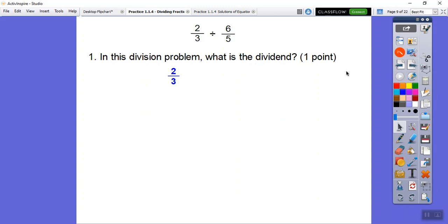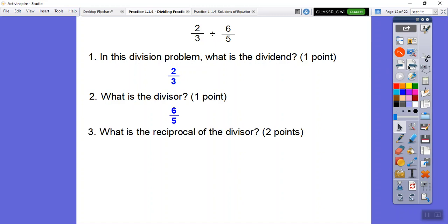And then this one says which one is the divisor? Let's see, the quotient is the answer, I apologize. So the divisor is this one, dividend divided by the divisor. So the divisor is six-fifths. And then the next part is what's the reciprocal? Is it starting to sort of ring a bell? Reciprocal is to flip the fraction, so what's the reciprocal of six-fifths? Five-sixths.